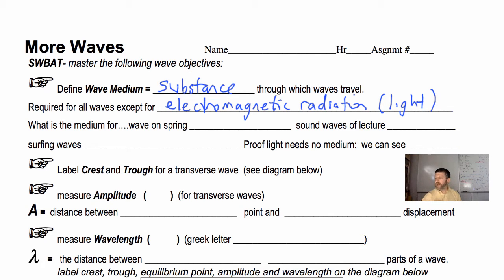So let's talk about some of the mediums that you might have. What is the medium for a wave on a spring? The spring. Yeah, that's what it's traveling through. How about the sound waves that you guys are hearing for this lecture right now? The air is the medium. Without that air you would not be hearing that.